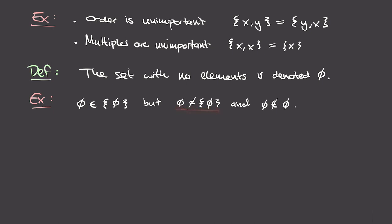While the empty set is an element of the set containing the empty set, it's not the case that the empty set equals the set containing the empty set. On one hand, you have an empty bag; on the other, a bag containing the empty bag — these are not the same. Using the definition of equality: the set containing the empty set has a single element (the empty set), whereas the empty set itself has no elements, so they don't have the same elements. Also, the empty set is not an element of itself, because the empty set doesn't have any elements.